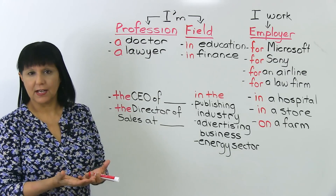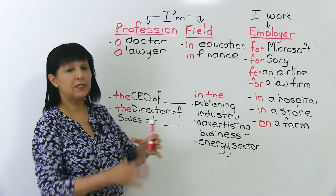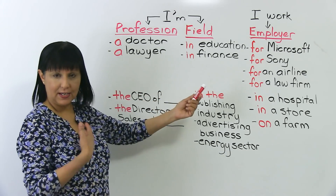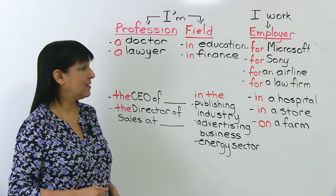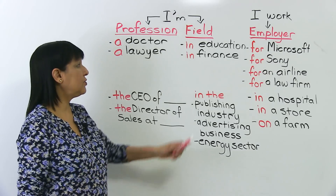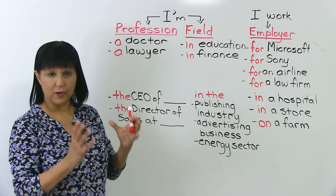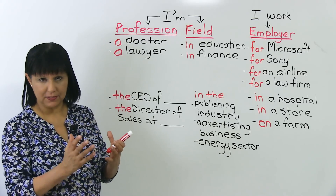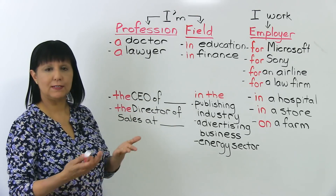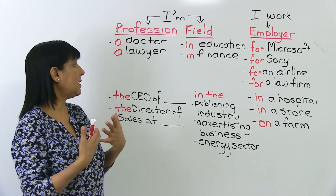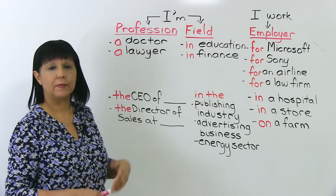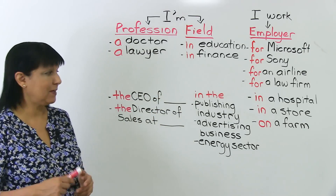A second way to answer is to talk about the field that you work in. For example, I could say I'm in education. Somebody could say I'm in finance. So that's the field or the area of work — the professional field. For yourself, think: how would you answer this? I'm a teacher, I'm an engineer, or I'm in engineering, I'm in finance.